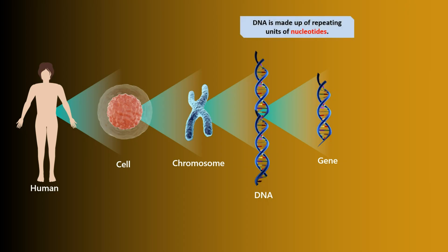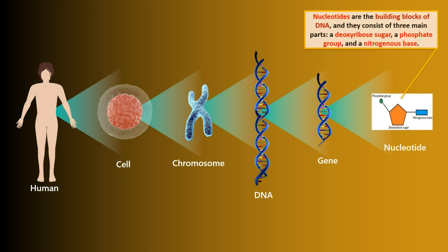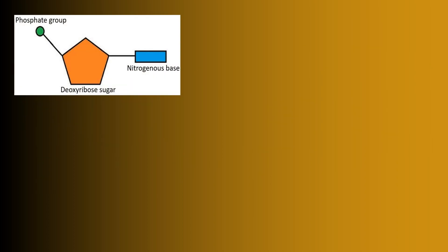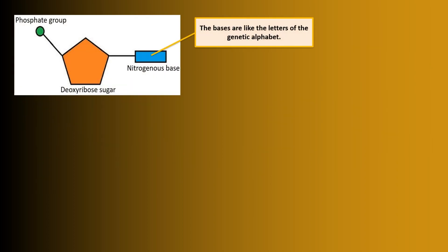DNA is made up of repeating units of nucleotides. Nucleotides are the building blocks of DNA, and they consist of three main parts: a deoxyribose sugar, a phosphate group, and a nitrogenous base. The bases are like the letters of the genetic alphabet,